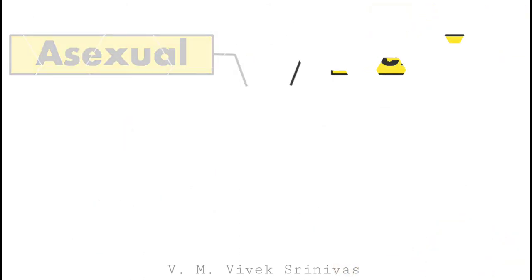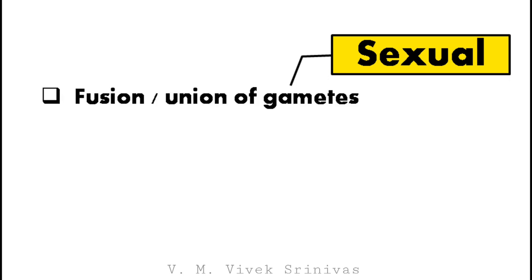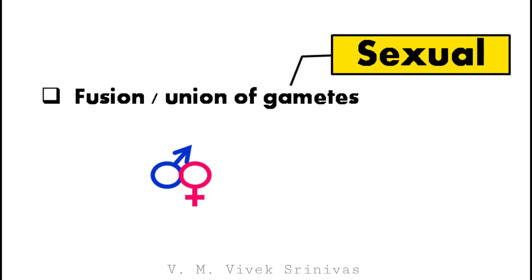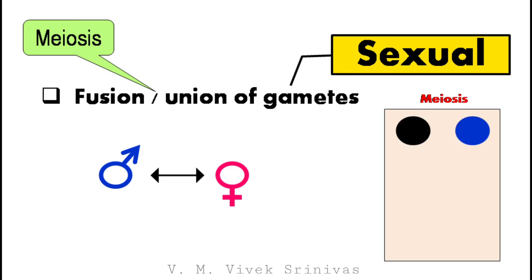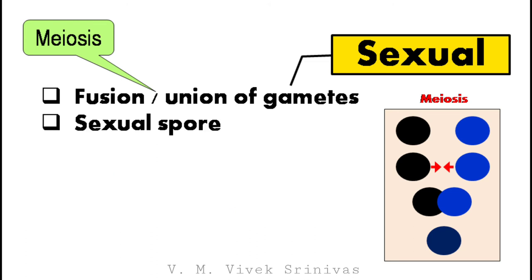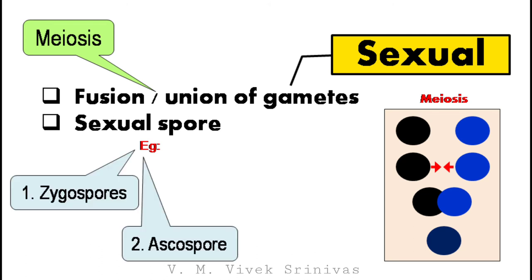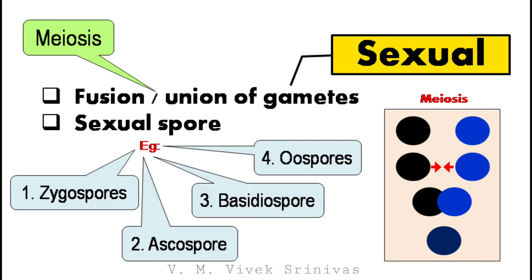Next, sexual reproduction. It occurs by fusion or union of gametes — that is, fusion of male and female gametes. This happens by meiosis, where from two cells one cell is formed. As a result of sexual reproduction, sexual spores are produced. Examples of sexual spores are zygospores, ascospores, basidiospores, and oospores.